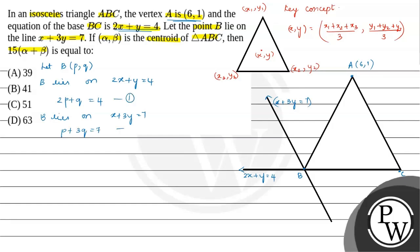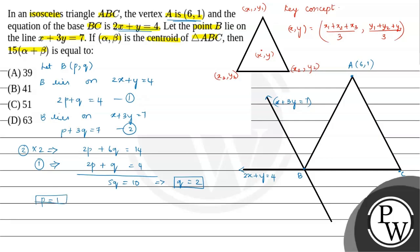Let us take 2p + q = 4 as equation 1 and p + 3q = 7 as equation 2. Multiplying equation 2 by 2 gives 2p + 6q = 14. Subtracting equation 1 from this gives 5q = 10, which implies q = 2. Substituting q into equation 1 gives p = 1. So the coordinate of B is (1, 2).